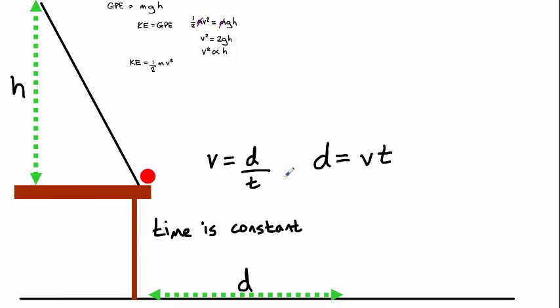We've said that that time that the ball is allowed to travel sideways before it hits the ground is a constant. So similarly to what we did earlier with V squared and H, we can change this equation to be D is proportional to V. Now what we're interested in remember is how the vertical height of the ramp is related to the horizontal distance that the ball travels. So we need to be able to link together our V squared is proportional to H to our D is proportional to V.